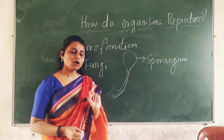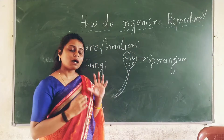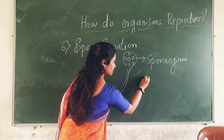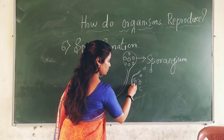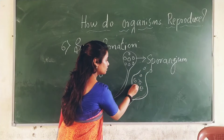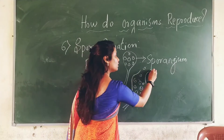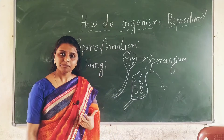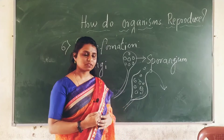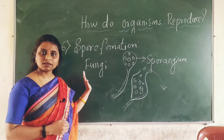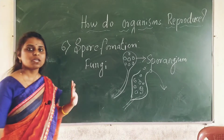The sporangium contains small round structures called spores. When the sporangium splits open, these spores come out. Each of these spores can develop into a whole fungi colony or whole fungi structure. This spore formation is usually seen in fungi. This is the sixth type of asexual reproduction we have studied.